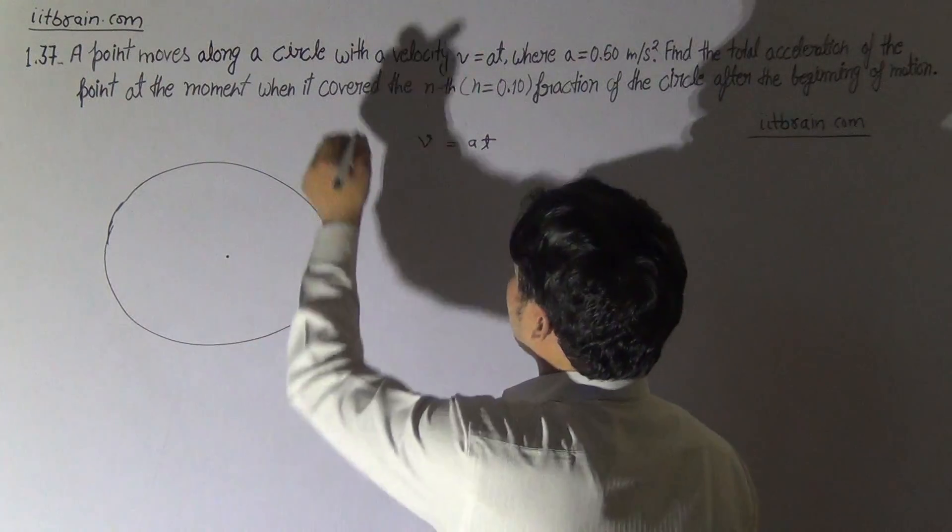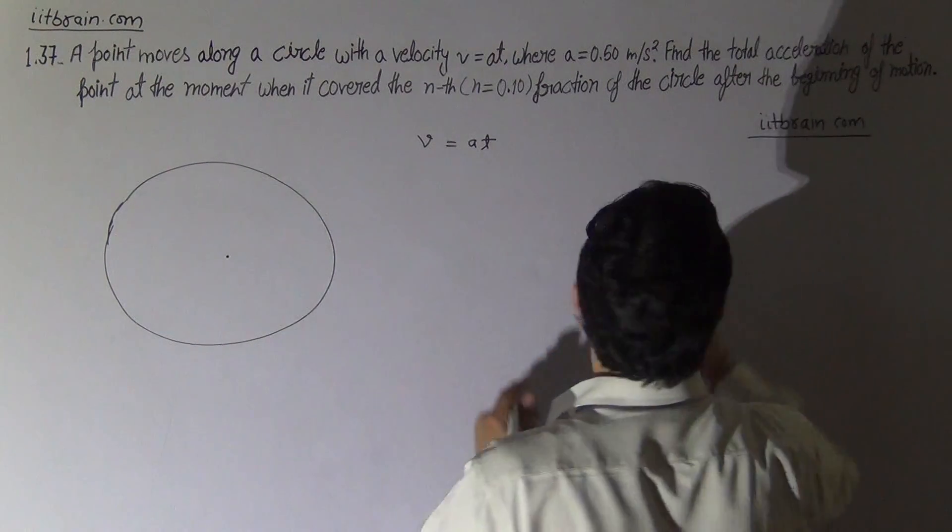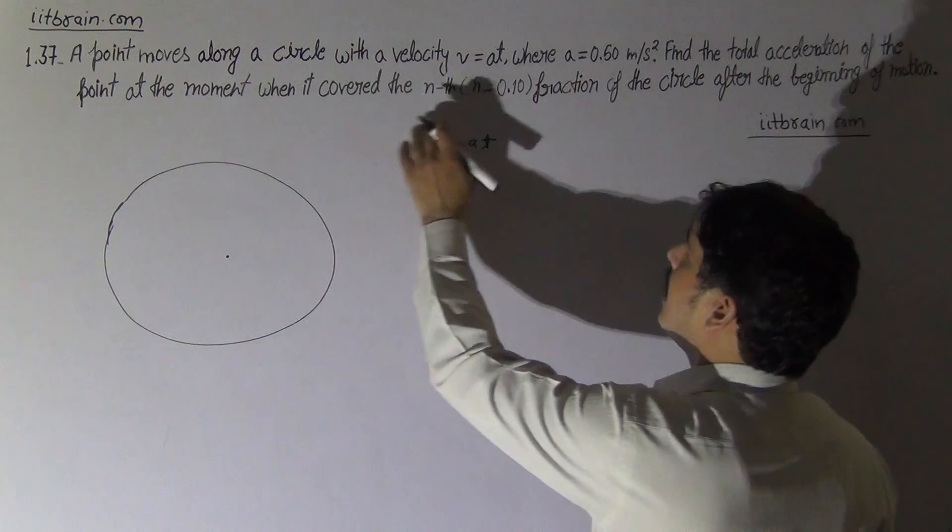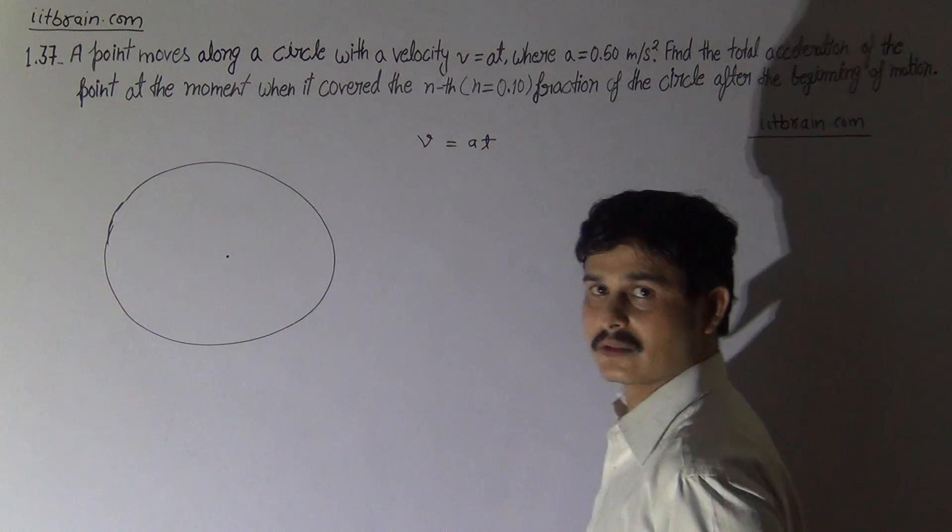At every moment it is an example of non-uniform circular motion. The total acceleration of the point at the moment when it covered the nth, 0.1 fraction of the circle.